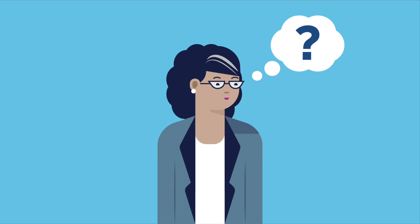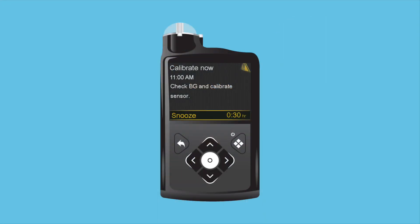Will she still need her meter? Yes, Lisa sees she will still need her BG meter. The CGM system needs meter readings to keep the system working properly. These BG readings calibrate the system for optimal CGM performance.